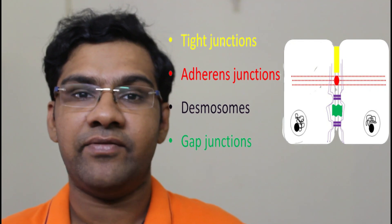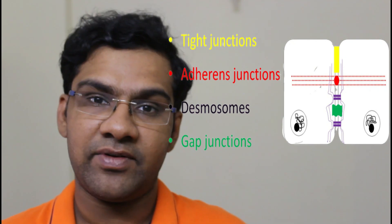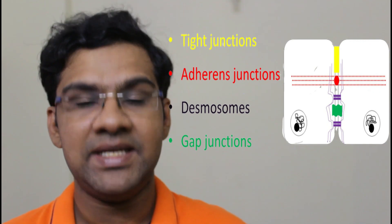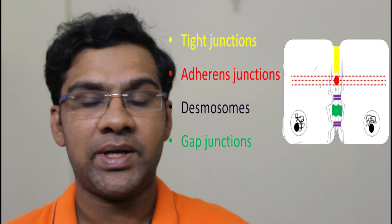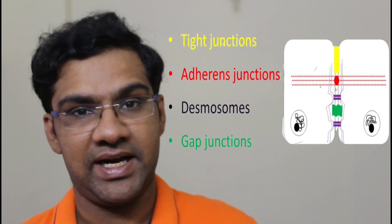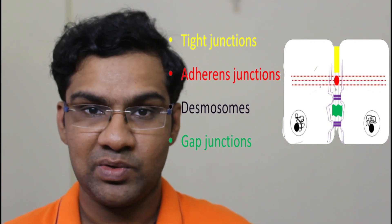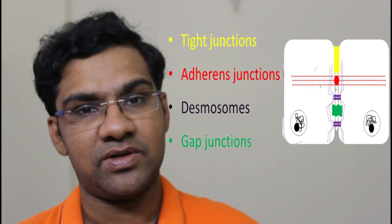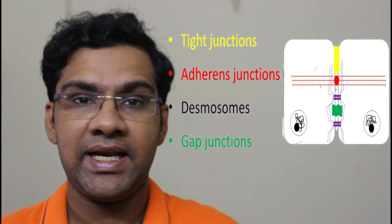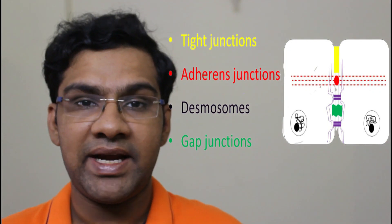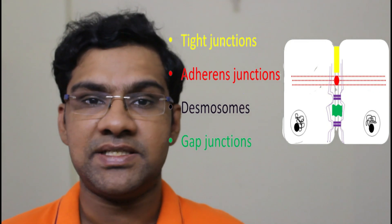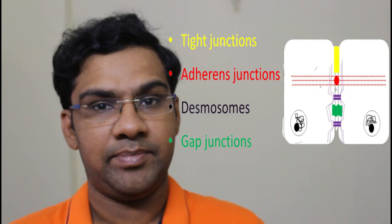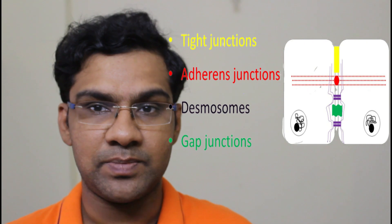Adherent junctions maintain adhesion by binding with actin filaments which radiate from the nucleus of the cell. The fourth one are desmosomes. Desmosomes are major components in maintaining adhesion — they not only play a major role in adhesion but also in transmission of signals. They maintain adhesion by binding with keratin filaments present in keratinocytes.